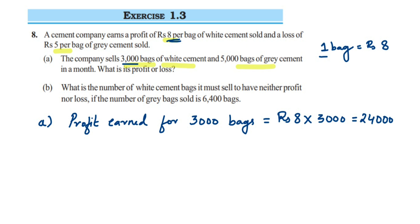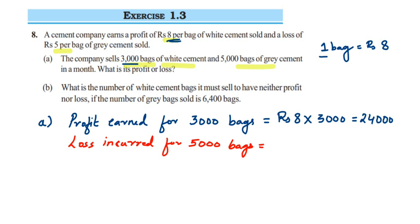Now similarly we have to find out the loss. Loss incurred for 5,000 bags — since they're losing, we multiply with minus 5 because it's a loss. So it will be rupees minus 5 multiplied by 5,000, which gives us minus 25,000.